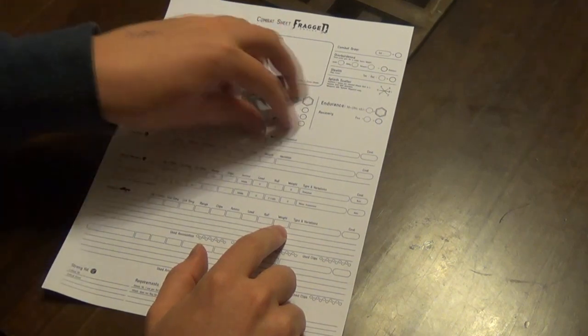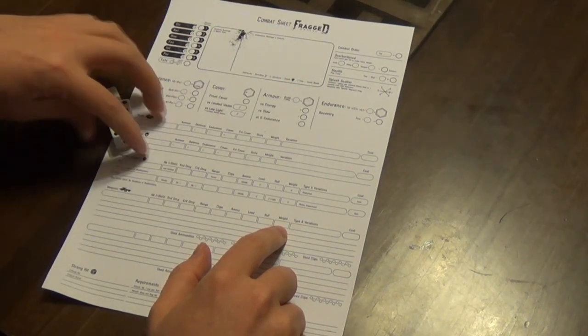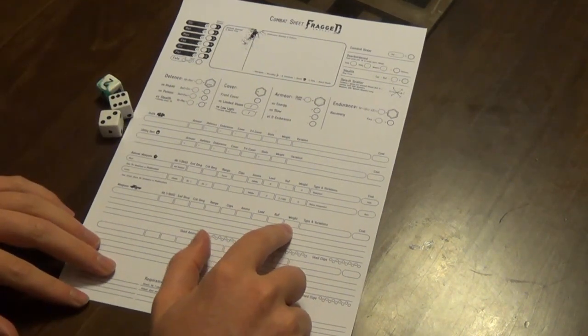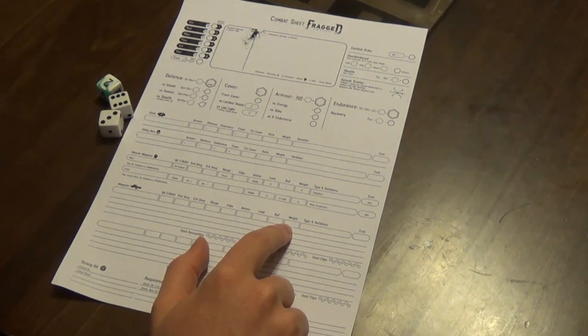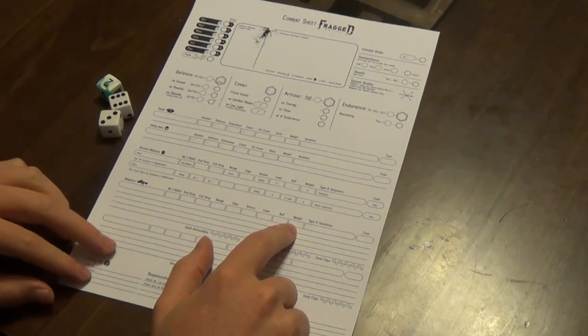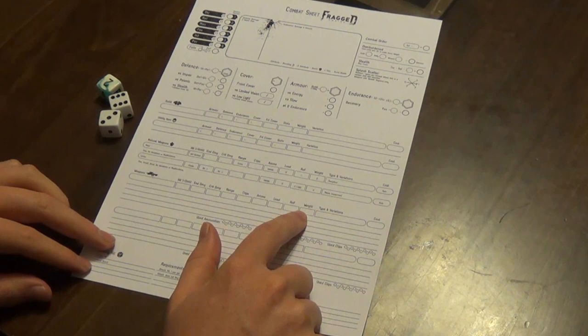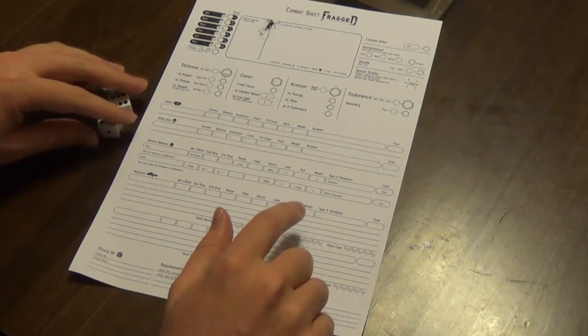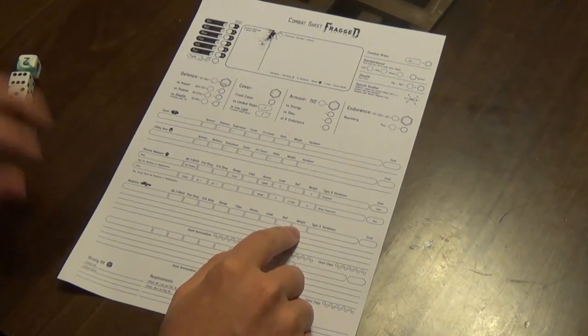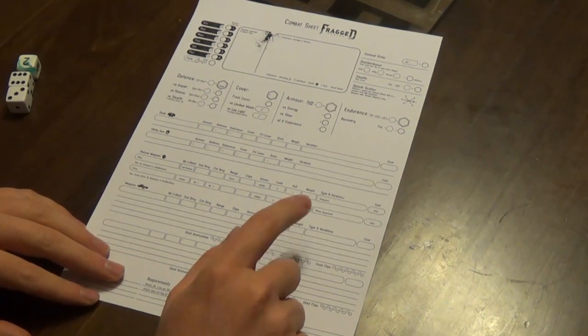Now weight—this determines how heavy and big your item is. If it's weight 1, it's one-handed. If it's weight 2 or more, then it is two-handed. Also, that is the amount of strength required to wield the weapon efficiently.